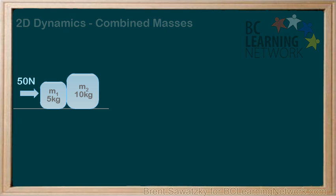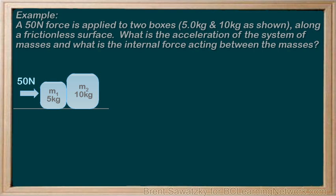Our example: a 50 newton force is applied to two boxes, 5 kilograms and 10 kilograms as shown, sitting on a frictionless surface. What is the acceleration of the system of masses, and what is the internal force acting between the masses?